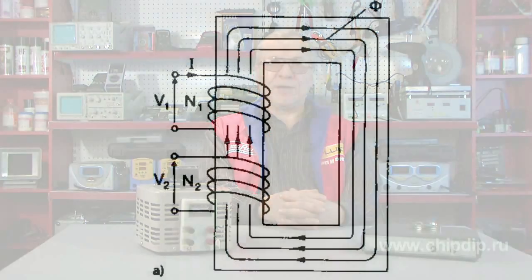Input voltage V1 is applied to the primary winding of the transformer, which leads to the appearance of an alternating magnetic field in it.